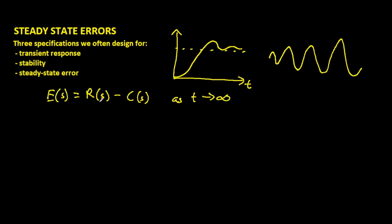There's no point in checking the response of the system while it is still in a transient state. When it gets to the steady state where it has now settled to a certain value, then you can check your steady-state error.